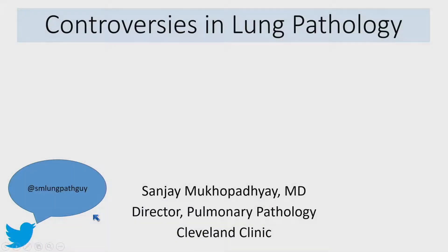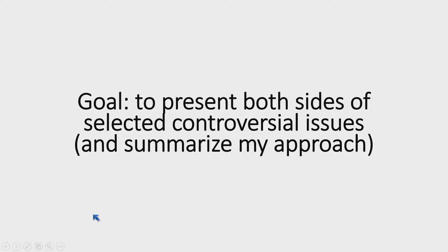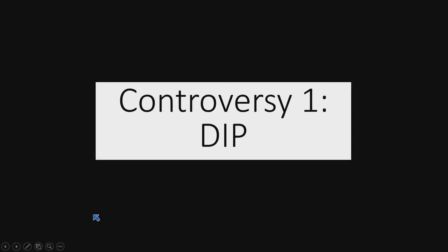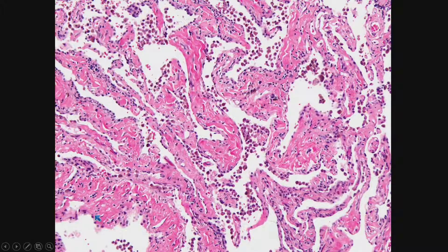I'm going to go through this quickly. Goal: to present both sides of the argument and tell you which side I come down on for some selected issues. First controversy: DIP, or desquamative interstitial pneumonia. This has been with us since Liebow's original description. People generally know that it means lots of macrophages within the alveoli — how many? Nobody knows. The pro side, the side that likes the term DIP, says DIP is an idiopathic interstitial pneumonia mostly caused by cigarette smoking.